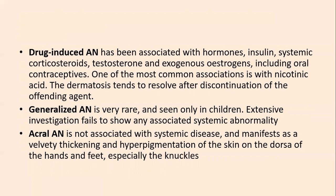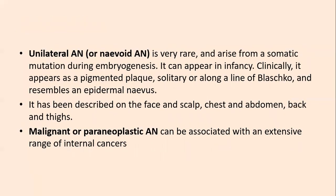Generalized acanthosis nigricans is very rare and seen only in children; extensive investigation fails to show any associated systemic abnormality. Acral acanthosis nigricans is not associated with any systemic disease and manifests as velvety thickening or hyperpigmentation of the skin on the dorsal hands and feet, especially the knuckles — presenting as knuckle pigmentation or nipple hyperkeratosis. Unilateral or nevoid acanthosis nigricans is a rare syndrome arising from somatic mutation during embryogenesis, present in infancy as pigmented plaques — solitary or along Blaschko's lines — resembling an epidermal nevus, also described on the face, scalp, chest, abdomen, back, and thigh.